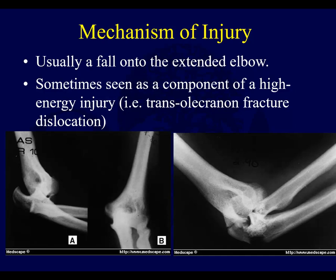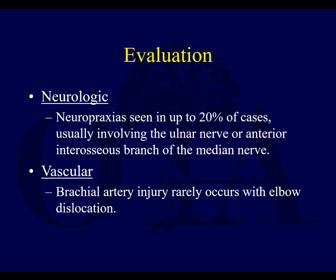Usually dislocation happens from a fall onto the extended elbow. Sometimes it can be more of a high-energy injury, maybe a trans-olecranon fracture dislocation. As with anything else, a careful neurologic and vascular exam is important. Brachial artery injuries don't happen that often with elbow dislocation, and nerve injuries are uncommon but can happen.